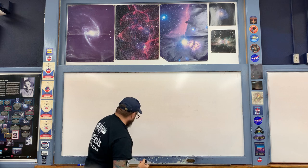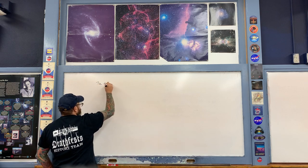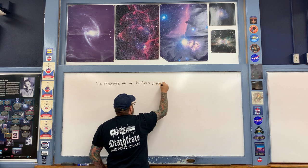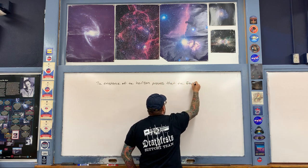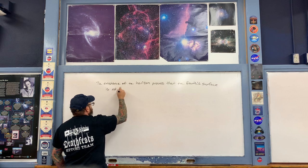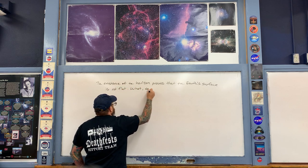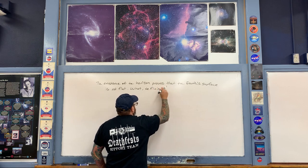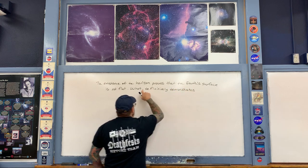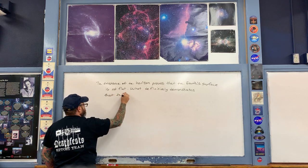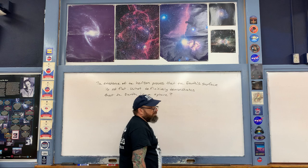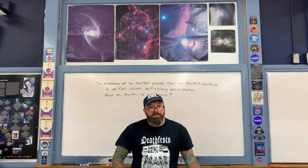Just to summarize: the existence of the horizon proves that the Earth's surface is not flat. What however definitively demonstrates that the Earth is a sphere? That's an observation that's a little bit more subtle. In order to understand it, we first have to get a little bit of perspective.